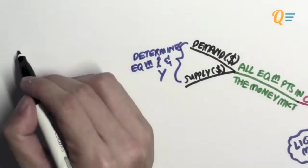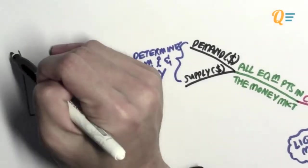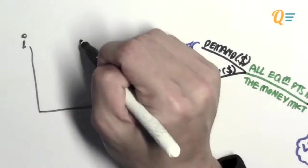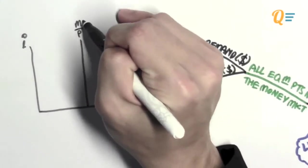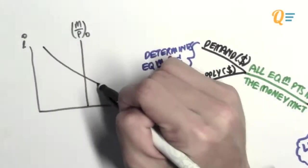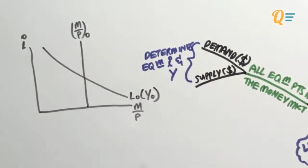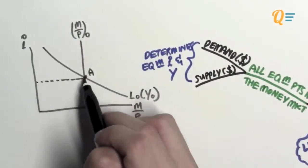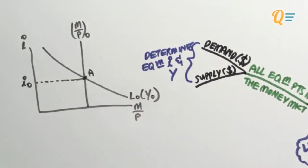Let's take a look at this equilibrium in the graph. This is your supply of money and this is your demand for money. This gives us the equilibrium at point A, where the interest rates level is at I0.